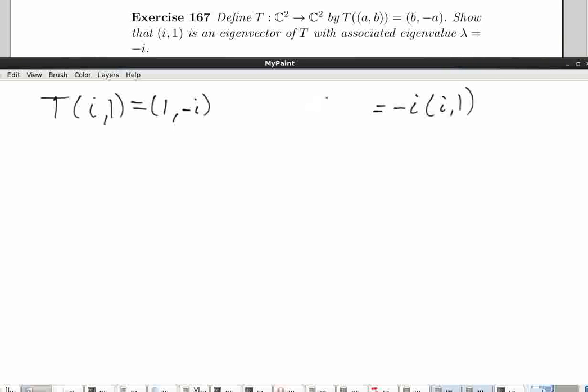So here, I can just multiply this through. It gives me negative i squared, negative i, which equals negative negative 1, negative i, which equals 1, negative i, and those two should be equal.